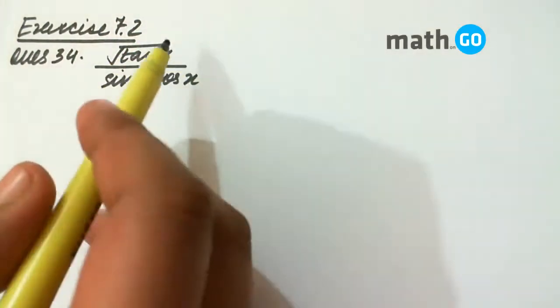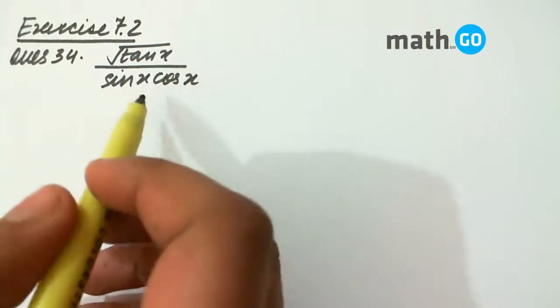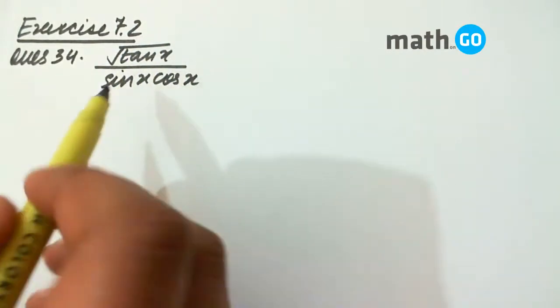What do we do? Usually, when tan x comes out, we tend to make sec square x in the numerator.